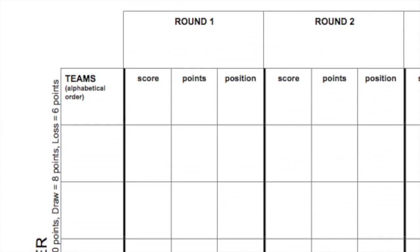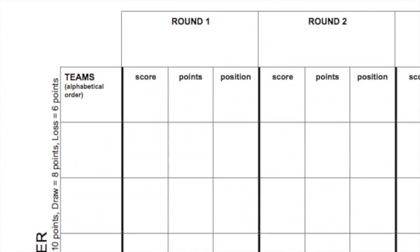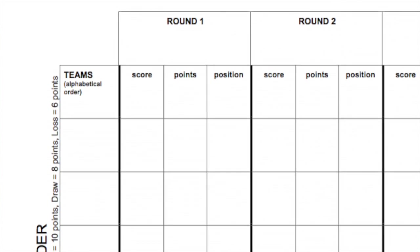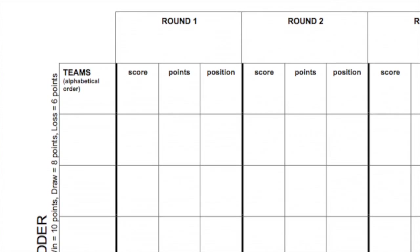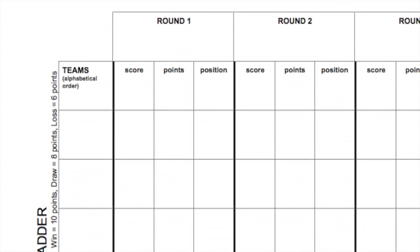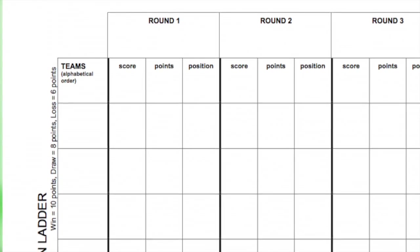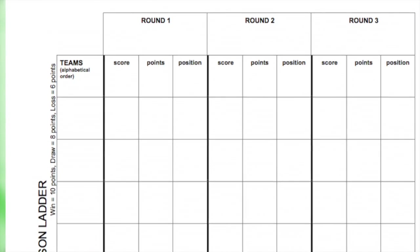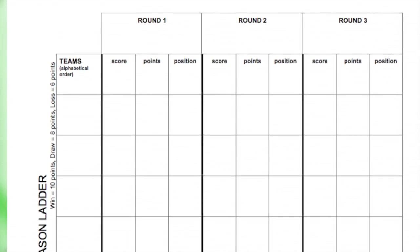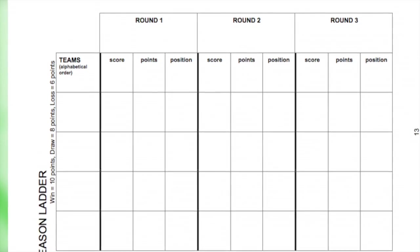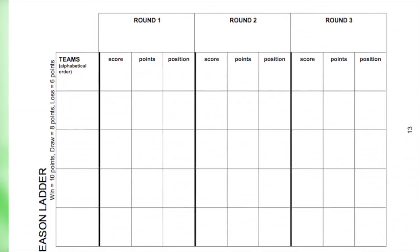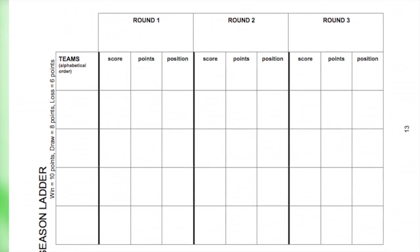Note the number of points awarded for a win, a draw and a loss. A team that loses a game has still contributed and so should earn points. This also reduces the apparent point difference between teams on the ladder.